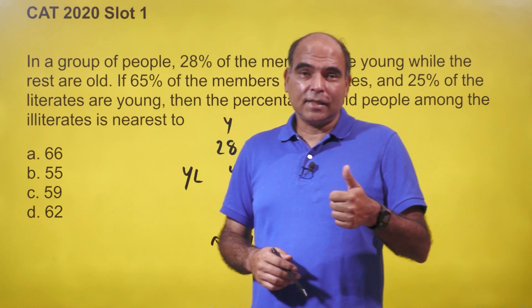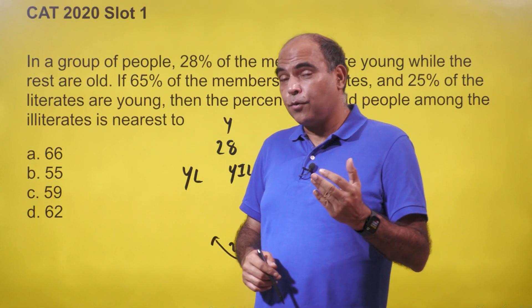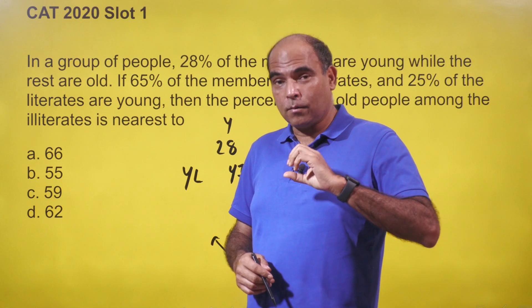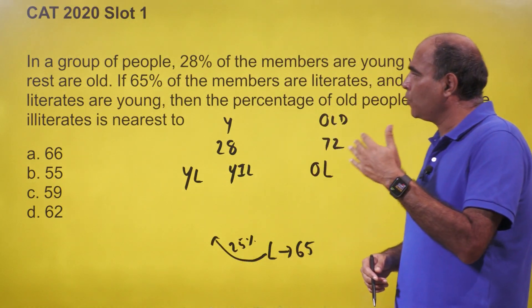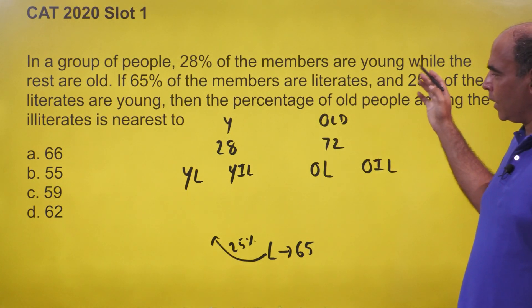Hi everyone, welcome back to the 60 second series. The CAT 2020 question slot one solved in the most interesting fashion, the simplest way to solve this. In a group of people, 28 percent of members are young while the rest are old.